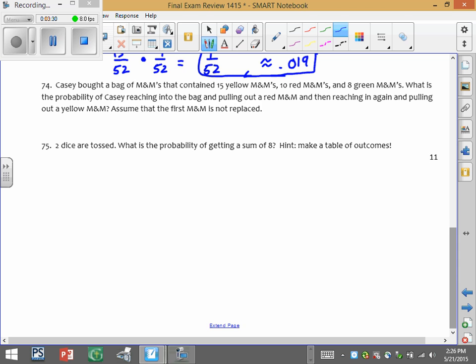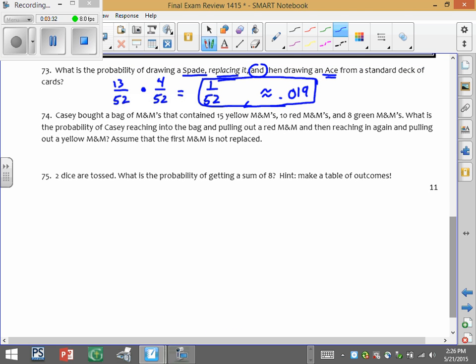In case you bought a bag of M&Ms, it came with 15 yellow, 10 red, and 8 green. So that gives me a total of 33. That is going to come in handy just a minute.